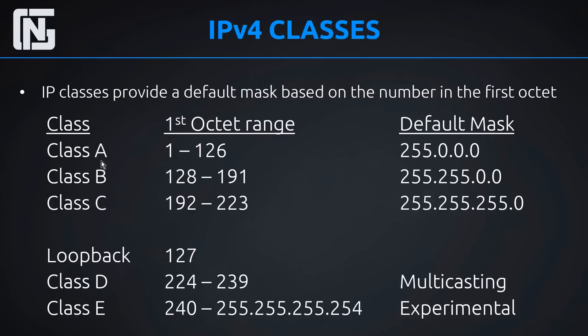To recap: Class A has a default mask of 255.0.0.0. Class B has a default mask of 255.255.0.0. And Class C has a default mask of 255.255.255.0. Those are our IPv4 classes — remember them.